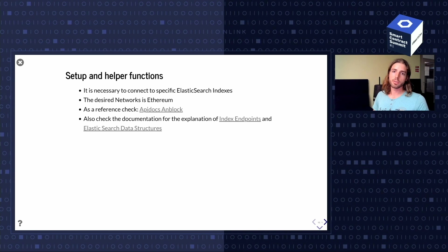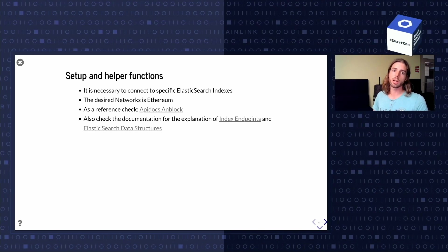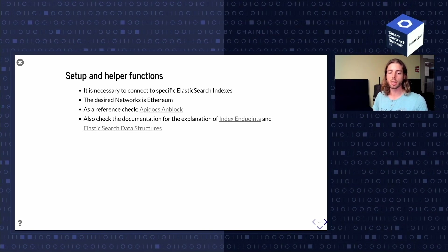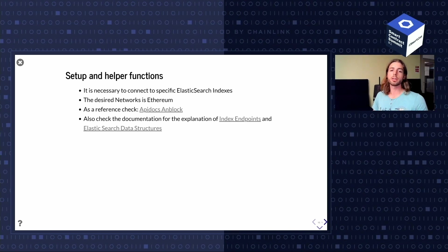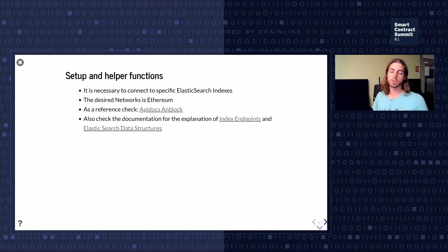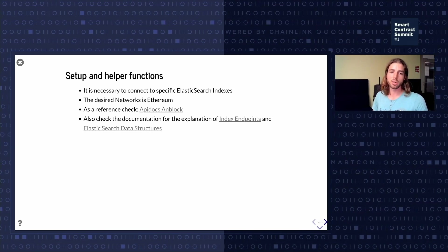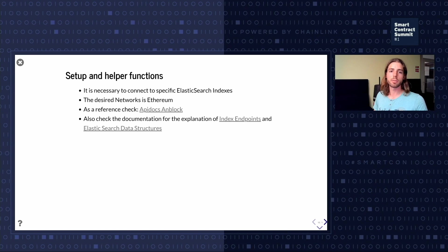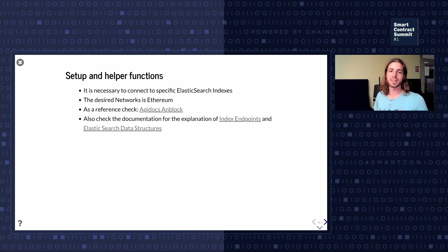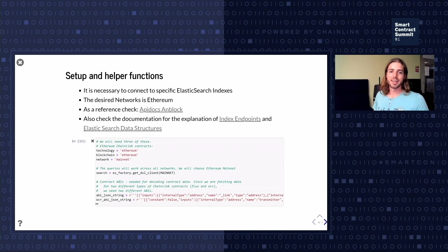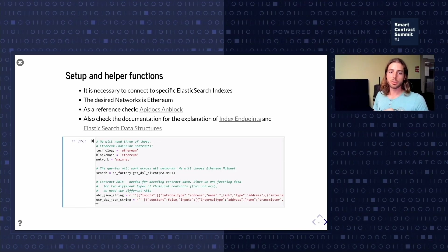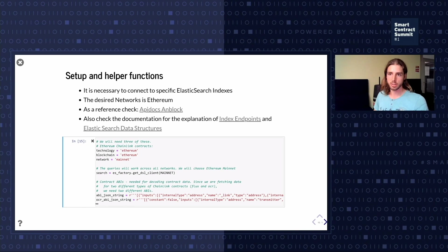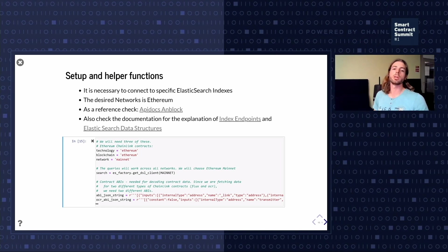To set up, we're going to connect to the ElasticSearch indexes. We're connected to Ethereum - we index multiple blockchains including xDai, BSC, Ethereum, and others including Bitcoin, with BSC and Bitcoin Cash expanding soon. We're also going to be using the ABIs for the Chainlink contracts for Flux and OCR so we can decode the data and turn it into human-readable form.